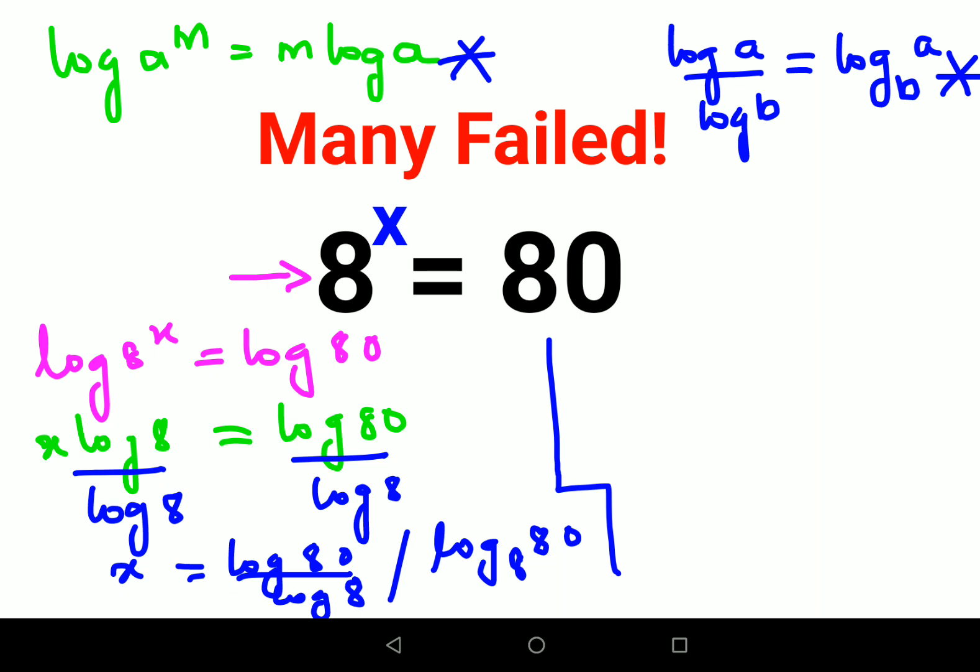Now next, what we can do over here is, let's assume that your options given were not neither this nor this. Then in that case, what you will do? So first we will try to write 80 in terms of 8. So we will write this as 8 into 10. Now at this point, yes, you can use logs on both sides.